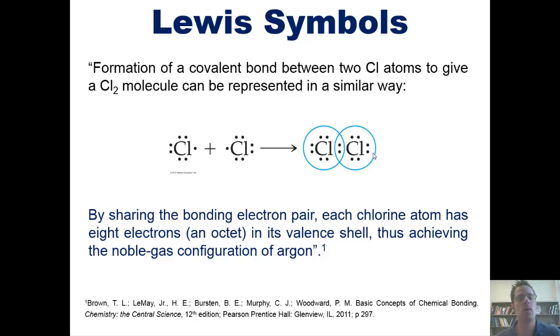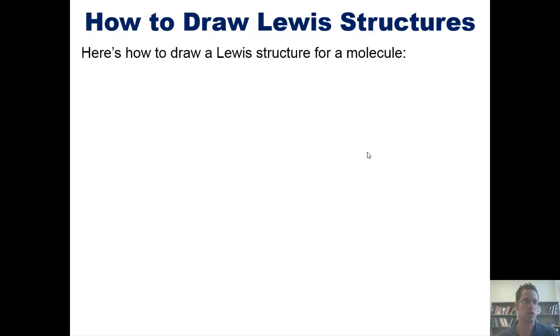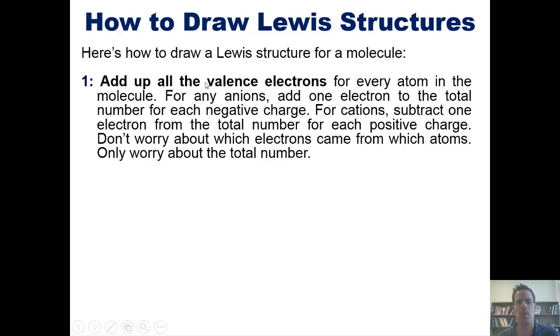With this groundwork laid, I now want to teach you how to draw Lewis structures. Lewis structures are small, simplified models or depictions showing the shapes of individual molecules. To draw a Lewis structure for a molecule, we first of all have to add up all the valence electrons for every atom in the molecule. For anions, add one electron to the total number for each negative charge. For cations, subtract one electron from the total number for each positive charge. Don't worry about which electrons came from which atoms. Only worry about the total number.